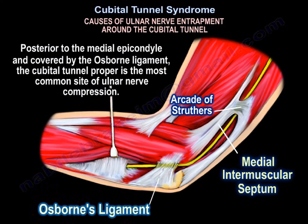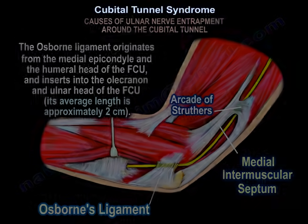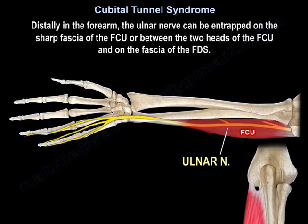Posterior to the medial epicondyle and covered by the Osborne ligament, the cubital tunnel proper is the most common site of ulnar nerve compression. The Osborne ligament originates from the medial epicondyle and the humeral head of the FCU and inserts into the olecranon and the ulnar head of the FCU. Its average length is approximately 2 cm. Distally in the forearm, the ulnar nerve can be entrapped on the sharp fascia of the flexor carpi ulnaris or between the two heads of the flexor carpi ulnaris and on the fascia of the flexor digitorum superficialis.